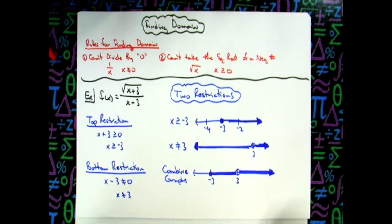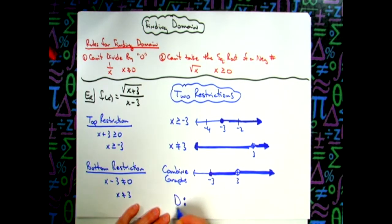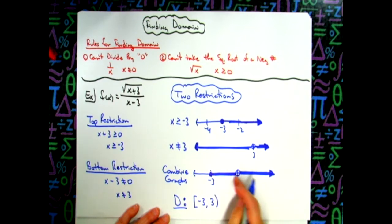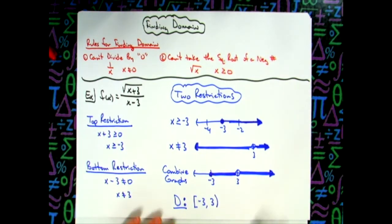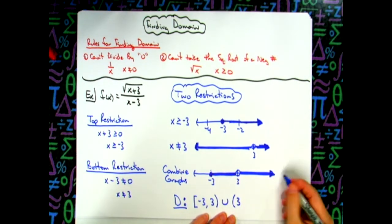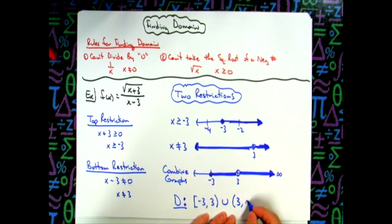Now most of the time we always need our domain in interval notation. So now from this number line I can take my domain and write it in interval notation. I'm going to have a section right here which would be a square bracket from negative three all the way up to three but with the curvy bracket because I'm not including three. I'm going to skip over three. There's our union. We'll do open bracket on three again and then all of the other values all the way up to positive infinity.